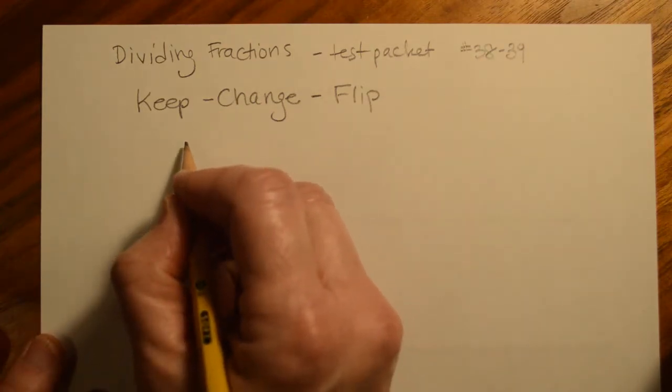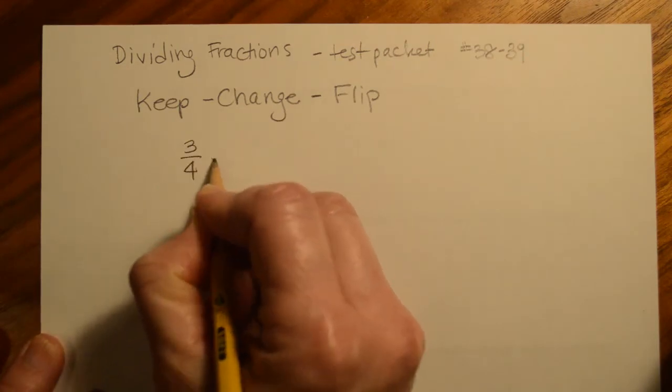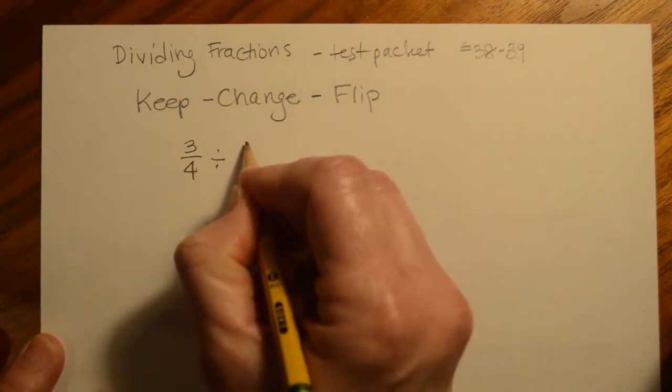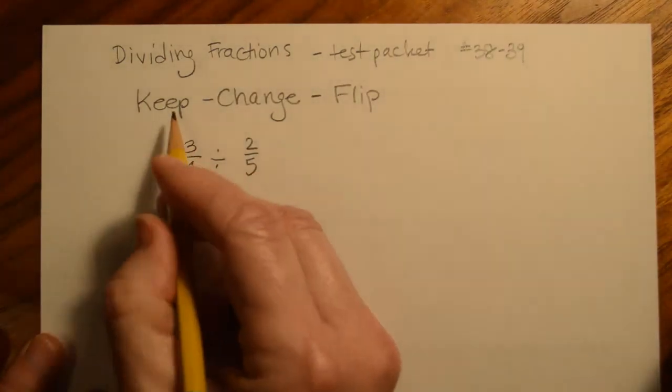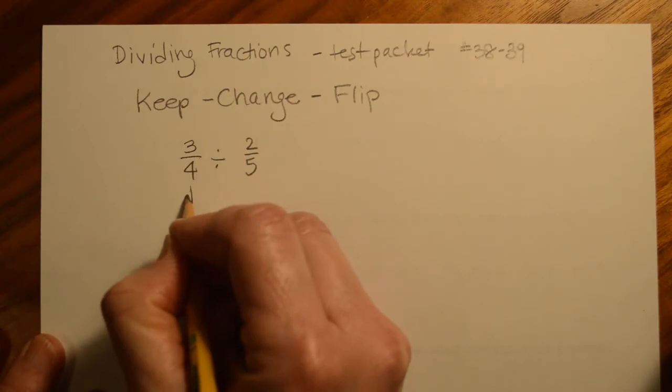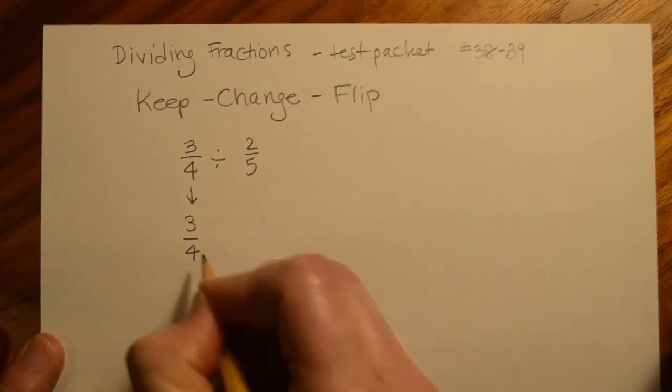All right, so let's say we had something like 3/4 divided by 2/5. All right, so keep change flip says keep the first fraction the same. So I'm going to write it as 3/4,